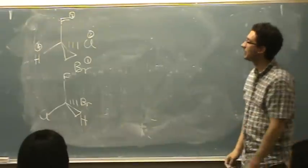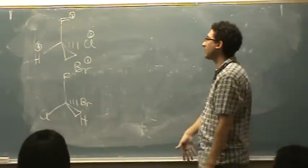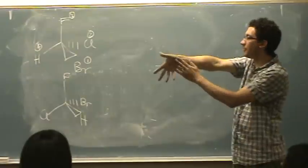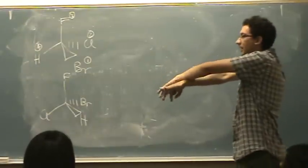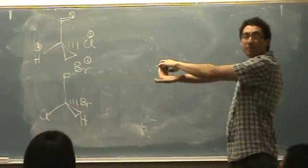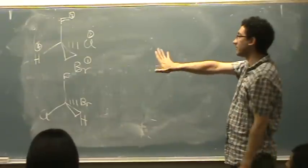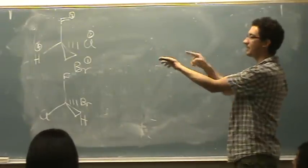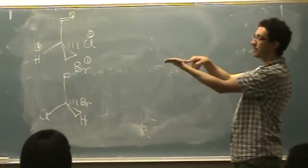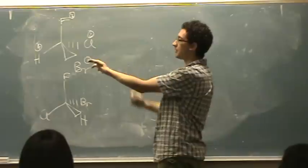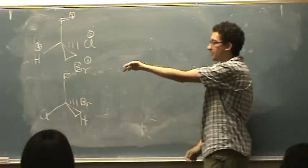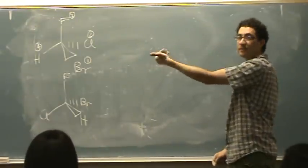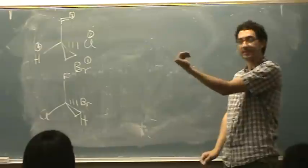If you do the thumb method: with your right hand, you put 4 here and try to go from 1 to 2 to 3, but you cannot bend your fingers around in that direction. With your left hand, if you put 1 out and 4 going that direction, you can curl your fingers 1, 2, 3. So it's a left-handed molecule — that gives S.